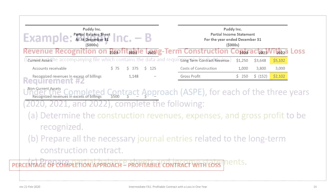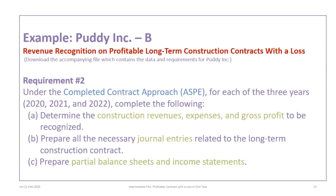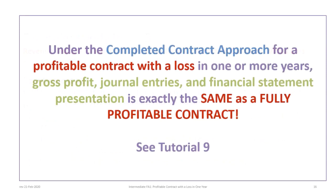The second part of the Putty B example is to do the same as in the first requirement, except under the completed contract approach. The good news is that under the completed contract approach for a profitable contract with a loss in one or more years, as long as the contract is still profitable overall, the gross profit, the journal entries, and the financial statement presentation is the same as for a fully profitable contract.